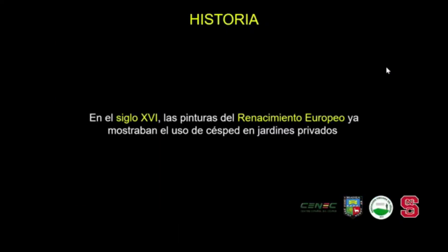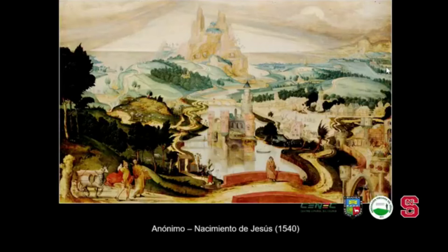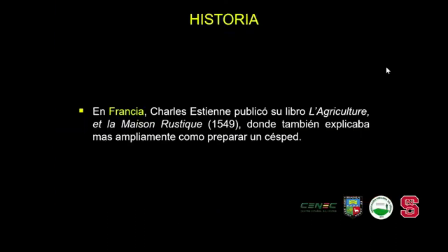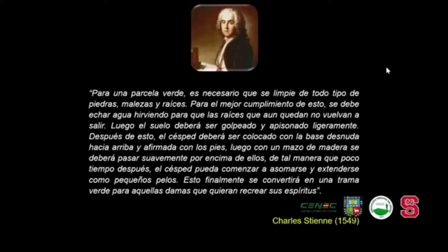En el siglo XVI ya las pinturas de residencias europeas mostraban el uso de césped en jardines privados. En Francia, Charles Estienne publicó un libro llamado La agricultura y la casa rústica, donde también se explicaba cómo preparar un césped. En ese extracto se indica que el césped deberá ser colocado con la base desnuda hacia arriba y afirmada con los pies, y luego con un mazo de madera se deberá pasar suavemente por encima para que poco tiempo después el césped pueda comenzar a asomarse y extenderse como pequeños pelos. Esa es una visión de 1540.